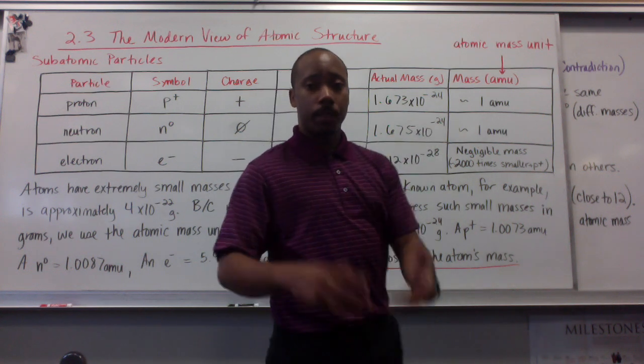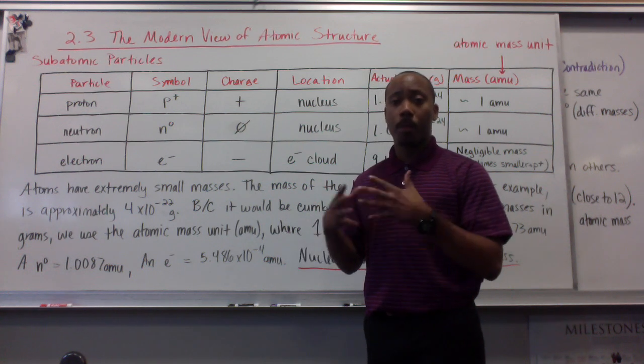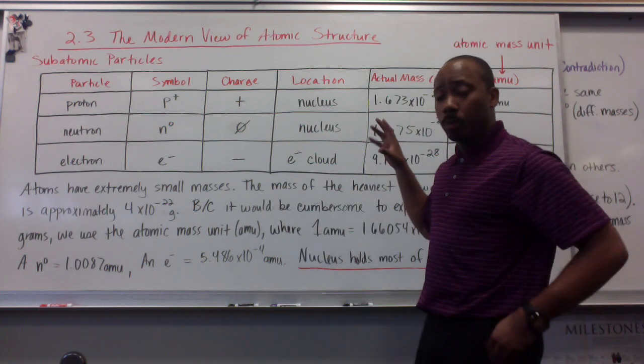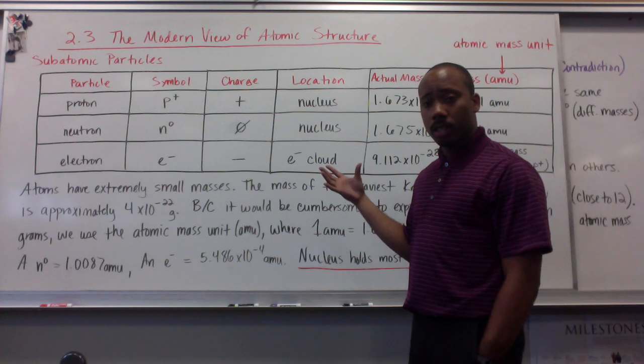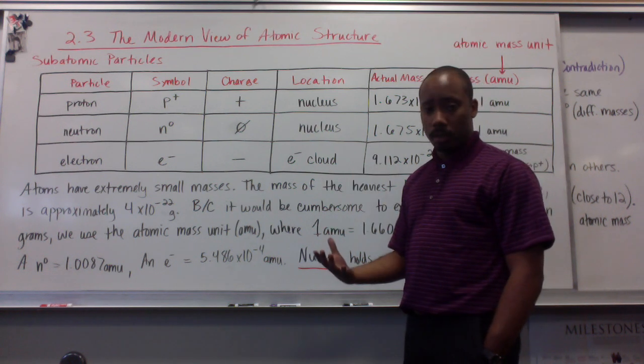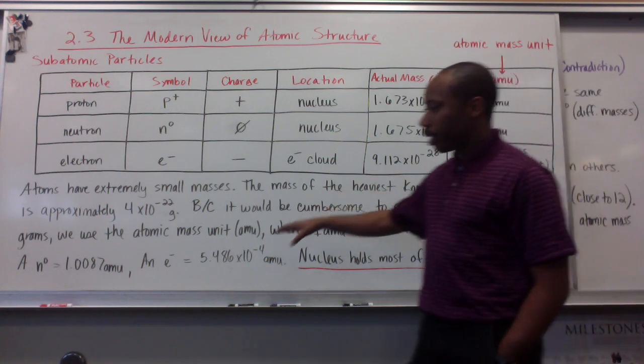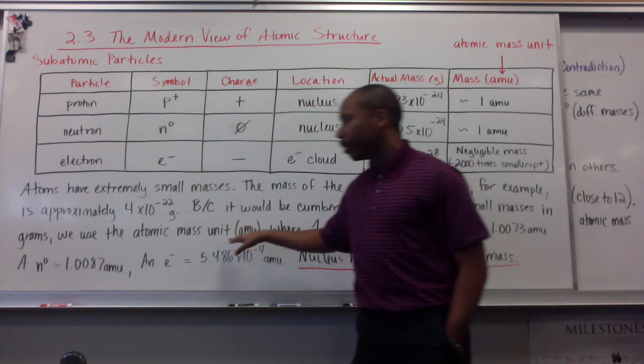And because it would be very difficult to express all of our numbers quantitatively in this type of scale, such and such number to the negative 24th, 26th, 30th, going on as we do more mathematics with these type of numbers, because it would be very cumbersome and difficult to deal with these types of numbers all the time, man created a different scale. Scientists created a different scale, and we express these small numbers in terms of a scale called the atomic mass unit.